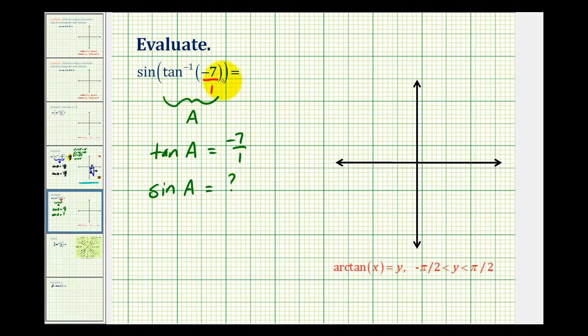Now one more thing to consider before we draw a reference triangle: we need to remember the output or the range of inverse tangent is the open interval from negative pi over two to positive pi over two, which means angle A must be in quadrant one or quadrant four.